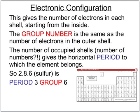The electronic configuration or electronic structure tells us something about the number of electrons in each shell, starting from the inside. The group number is the same as the number of electrons in the outer shell. The period number is the number of occupied shells.